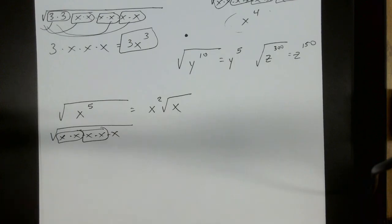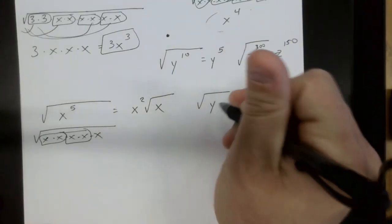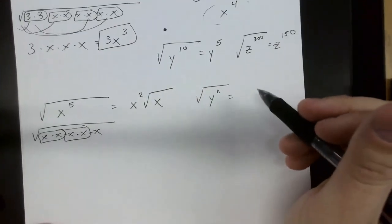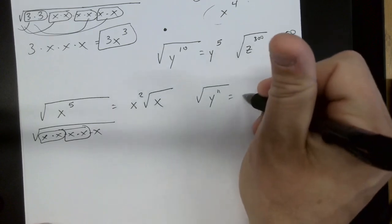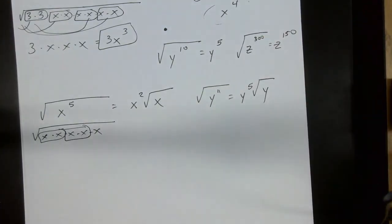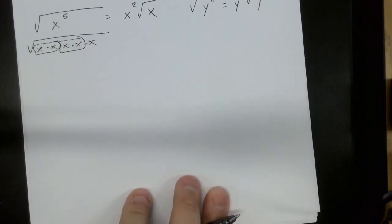If we happen to have the square root of y to the 11th, on the outside, how many times does 2 go into 11? 5 times with one left over would be our solution. So far, so good with me?